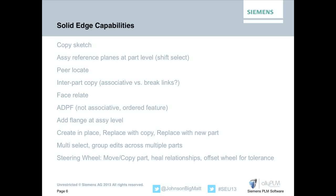Face relate is a synchronous tool in the part environment to create face relationships, and we have an assembly relationship as well to create relationships between additional components. Assembly driven part features can be non-associative - you can simply punch a hole through a part, or keep them associative. They're going to be an ordered feature, so if you've got a synchronous part and you punch an assembly feature through it, it'll actually be ordered in your model. You just in-place activate your model and transition that feature back to ordered.